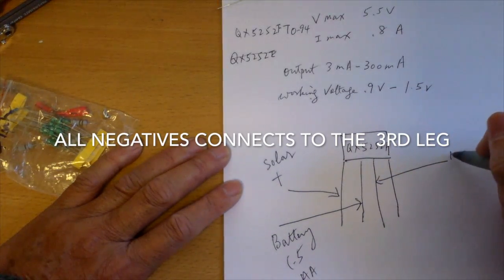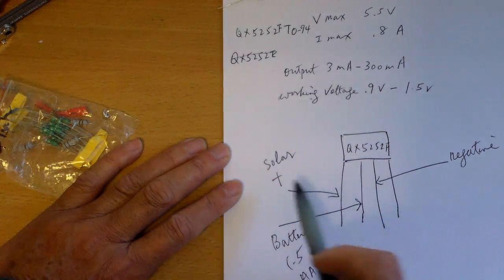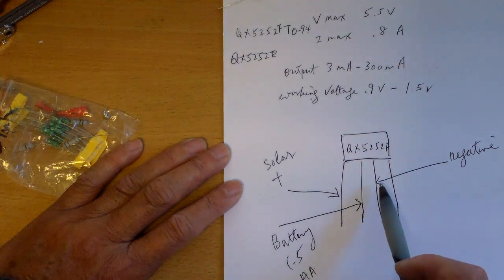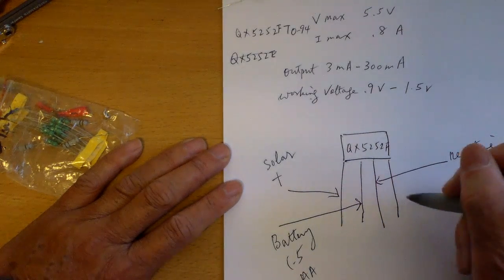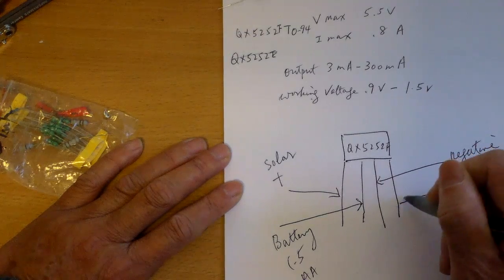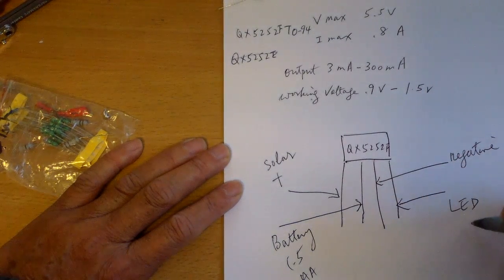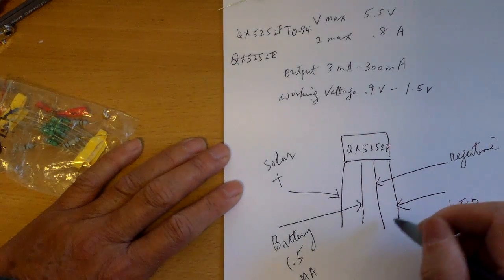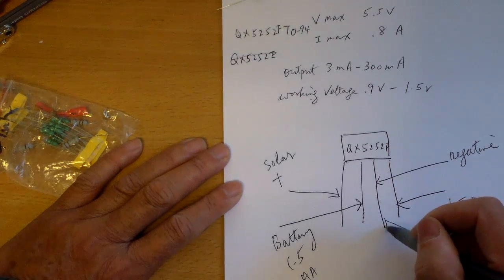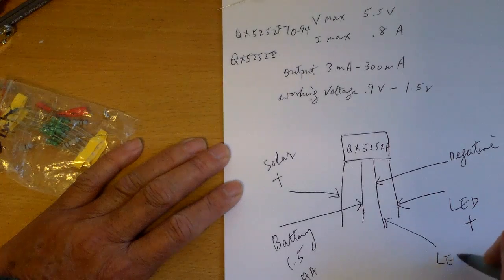The third leg is the ground or negative for all your connections. So your solar positive goes to here and your solar negative goes here. The fourth leg is for your connection to your LED, the plus side. So your LED negative side would also go on the third leg here, LED negative.